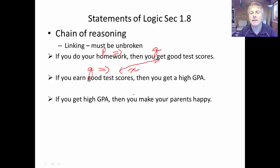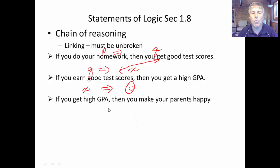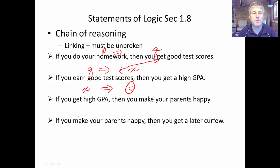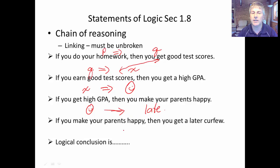Continuing the chain: 'If you make your parents happy, then you get a later curfew' — so happy parents implies staying out late. The overall conclusion of the entire chain of reasoning is: 'If you do your homework, you get a later curfew.' The chain must be unbroken, linking each conclusion as the next hypothesis all the way through.